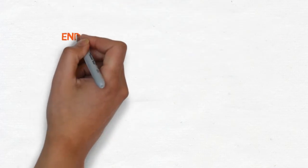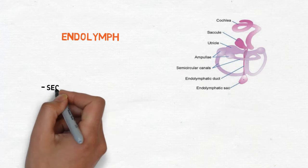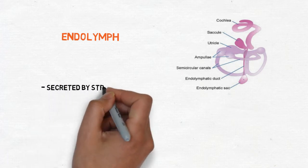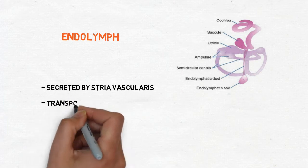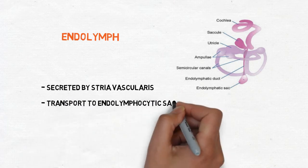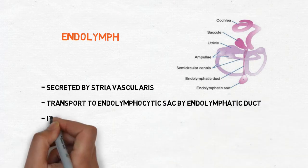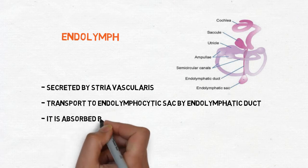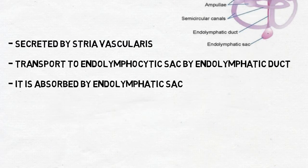Let's talk about normal physiology of endolymph. I already told that endolymph is secreted by stria vascularis. So look at this diagram. There is endolymphatic duct and endolymphatic sac. The endolymph is transported to endolymphatic sac by endolymphatic duct and endolymph is absorbed by endolymphatic sac.